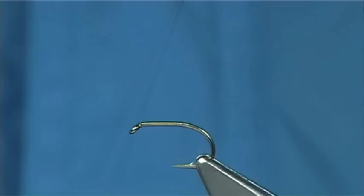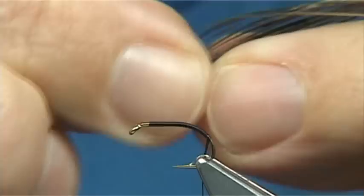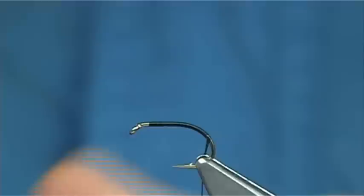Now we just start off with a black thread, this is a UTC 70 which is the fine. All I'm going to do is take the thread turns down around the bend to this point here and then removing the waste piece. This is some peacock, this is the eye feather and I've stripped the fibres off using bleach and this will give you a nice quill.